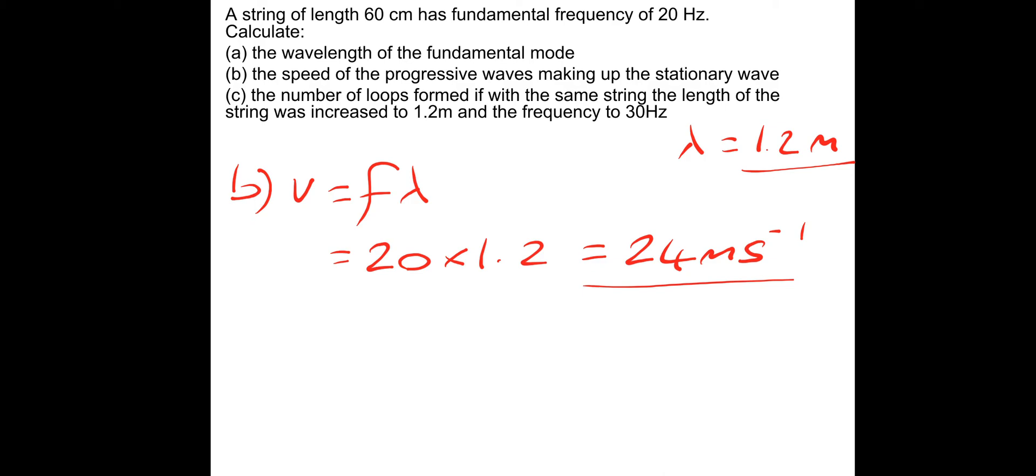Part C: the number of loops formed if with the same string the length of the string was increased to 1.2 meters and the frequency to 30 hertz. So it's a little bit confusing, this one. But what we need to do is calculate the length of each loop. So let's get the new wavelength. So the wavelength would be the wave speed divided by the frequency. So the wave speed would still be 24 meters per second divided by the new frequency of 30 hertz. So that gives a wavelength of 0.8 meters.